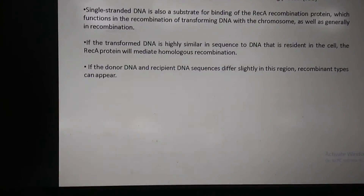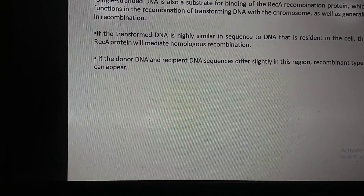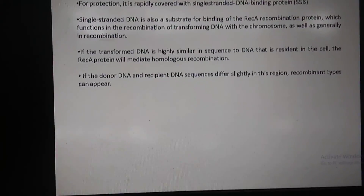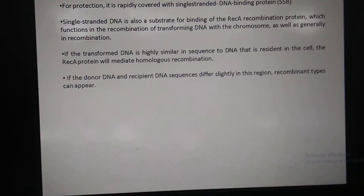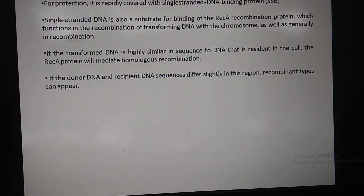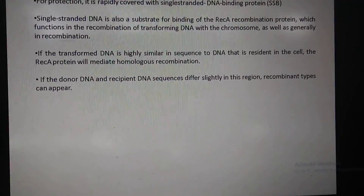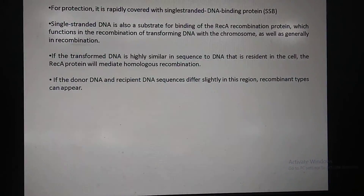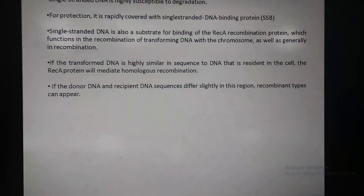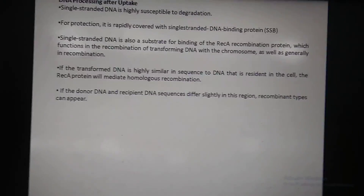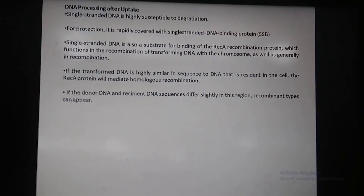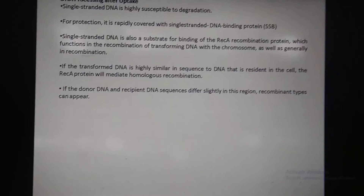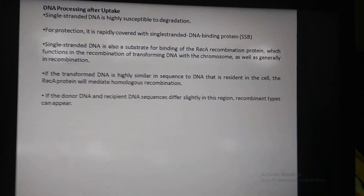Exchange between two highly similar sequences is called homologous recombination; exchange between dissimilar sequences is called non-homologous recombination. If the foreign DNA differs slightly from the resident DNA in a region, after recombination the bacteria will be slightly different because the foreign DNA introduced minor sequence variation. The host bacteria will thus become slightly altered due to recombination.